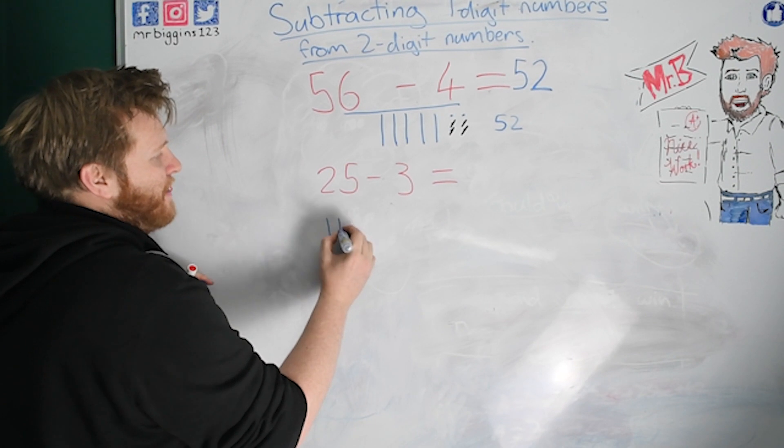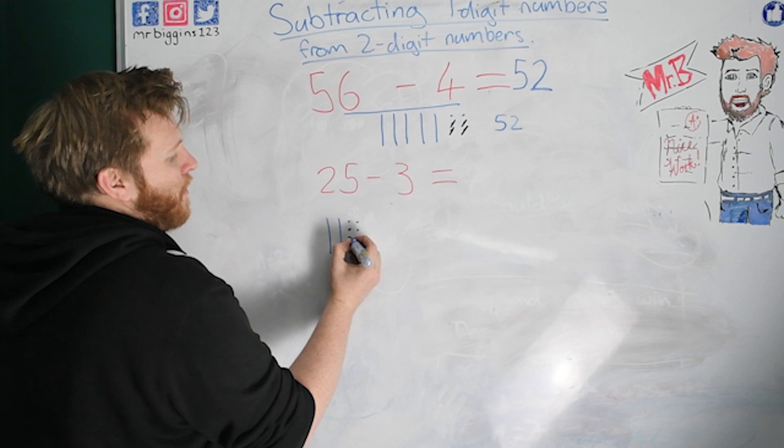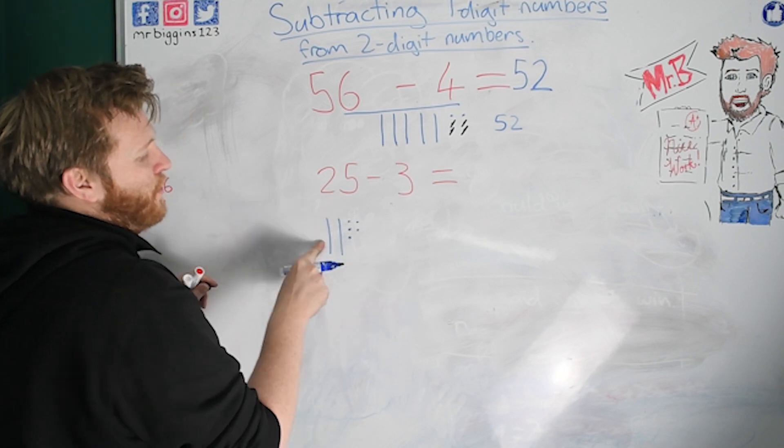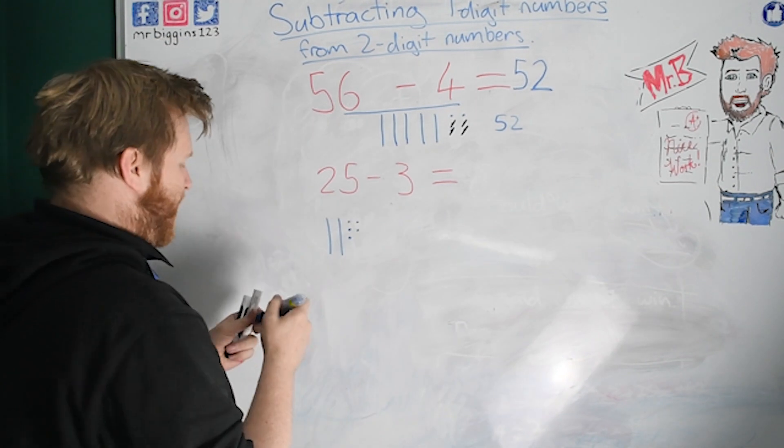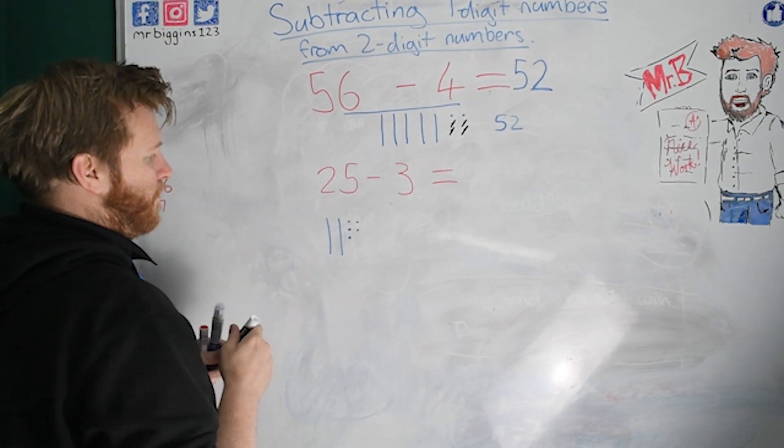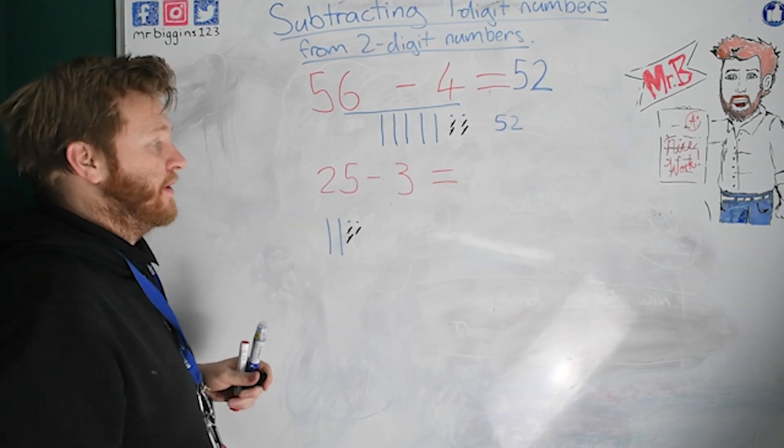Let's do it firstly with our tens and ones. So we're going to make the number 25. So I've got two tens and I've got five ones. And I'm going to take away three. One, two, three. Have a look at the number there and see if you know what the answer is.